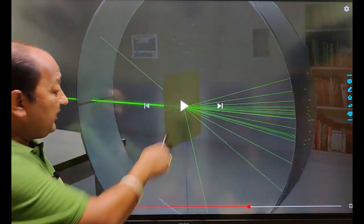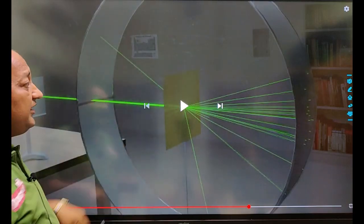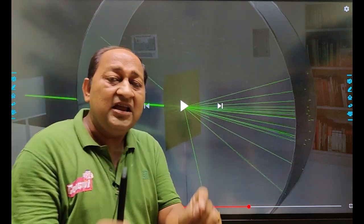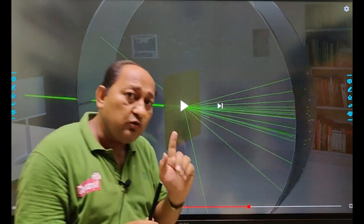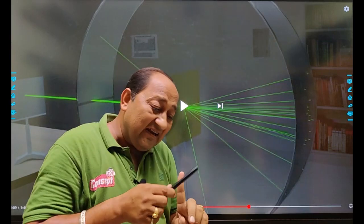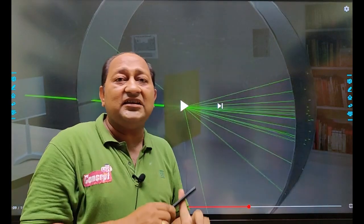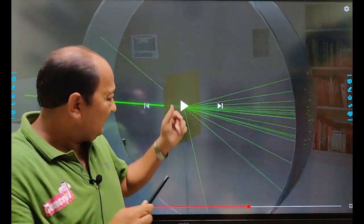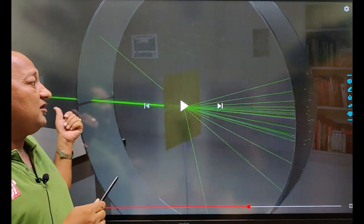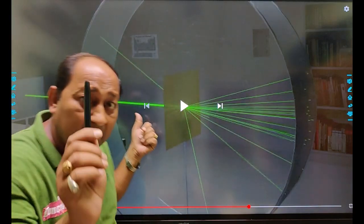A very few alpha particles pass through the gold foil. They are either deflected at very large angles or they are rebounded back on their pathway. Remember my observations.